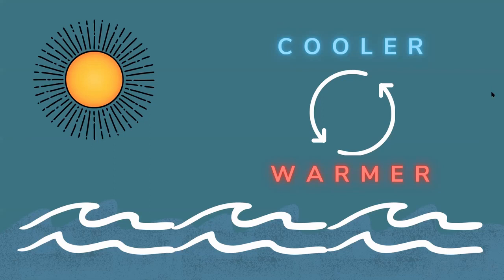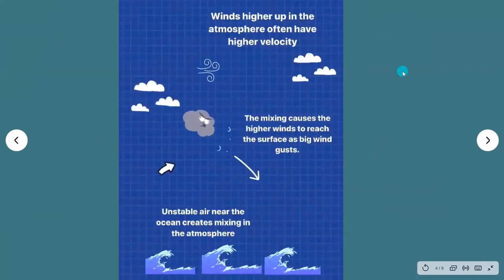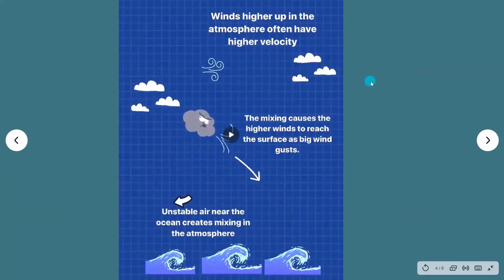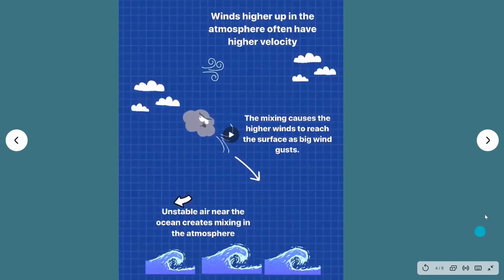When you have overturning of the atmosphere in an unstable environment, it leads to higher wind speeds, often at the higher levels of the atmosphere, to come down to the surface as gusts. So oftentimes you have the higher velocity winds at the higher levels above the surface, and the mixing that is happening from the turbulence causes these higher winds to reach the surface as big wind gusts.